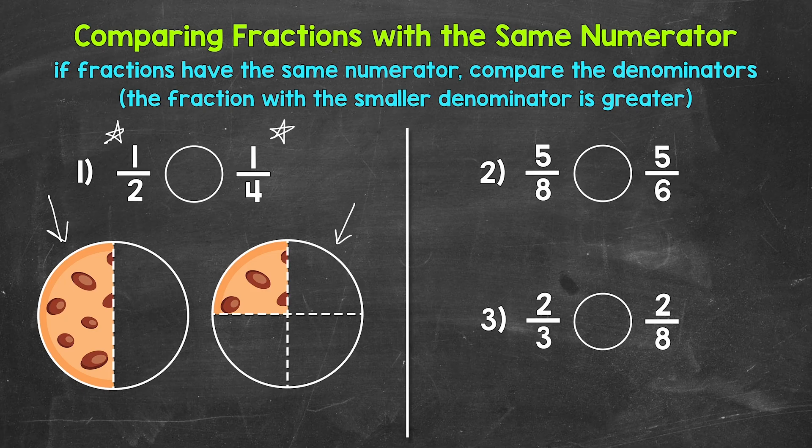The comparison symbol always opens up towards whatever is greater. So our symbol goes like this, and we can read this comparison from left to right as: one half is greater than one fourth.